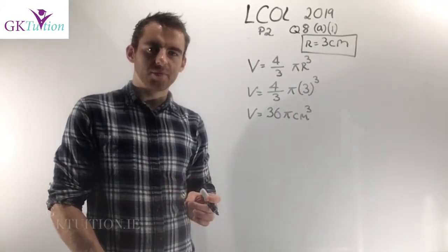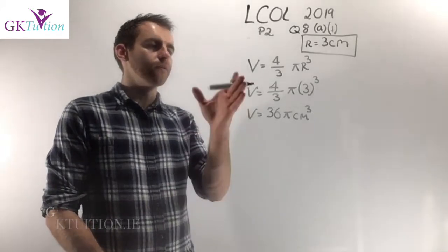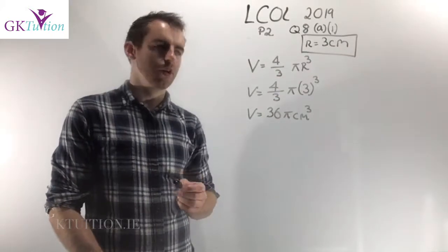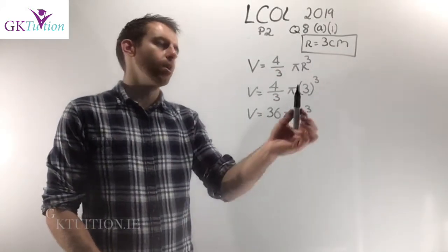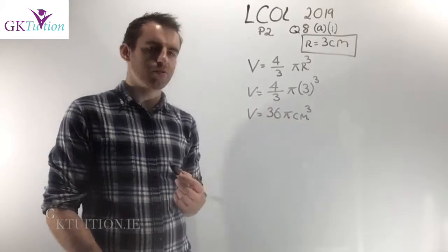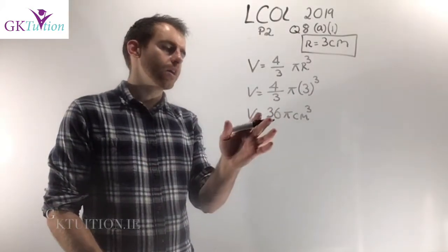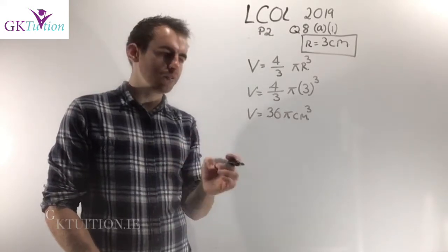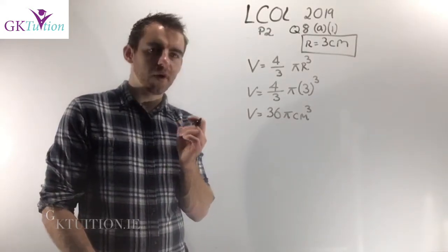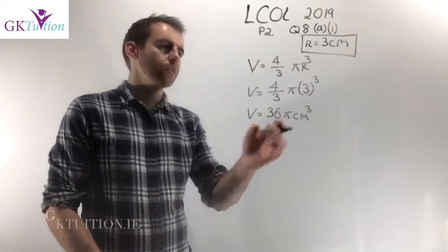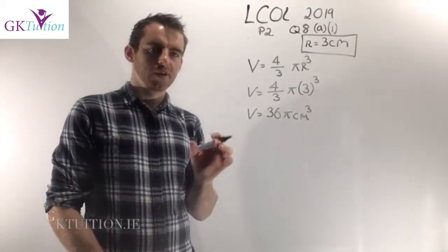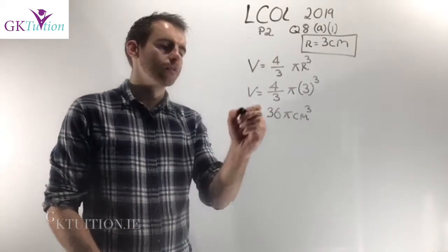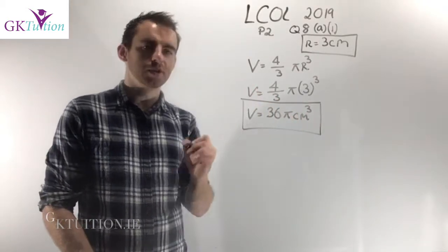If you go to your maths tables, to your area and volume page, there's a formula for the volume of a sphere: 4 over 3 pi r cubed, where r is the radius. So all I have to do is substitute r = 3. If you plug that into your calculator you get 36π. The question asks us to leave the answer in terms of pi, so the final answer is 36π centimeters cubed — remember volume is always cubed.